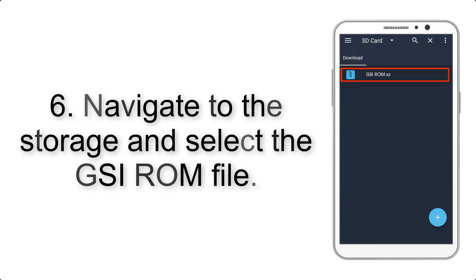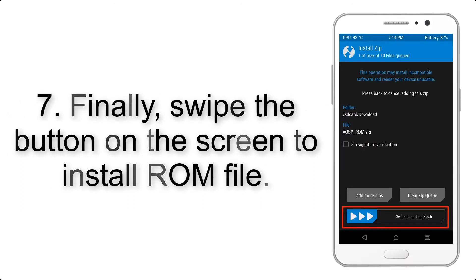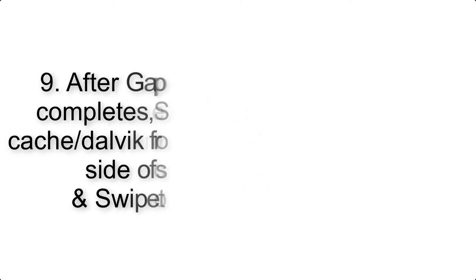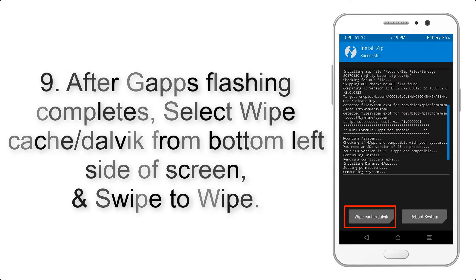Step 6: Navigate to the storage and select the GSI ROM file. Step 7: Finally, swipe the button on the screen to install the ROM file. Step 9: After GApps flashing completes, select Wipe Cache and Dalvik from the bottom left side of the screen.